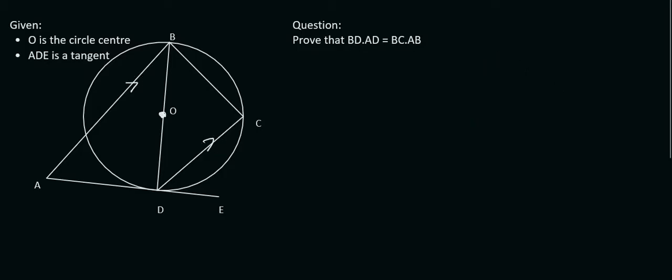So always go straight to the question, and the question has a BD in it. So I'm just going to go with BD like that. It's got AD, so AD will be there. BC is over here, and AB is over there. So which two triangles stand out to you?